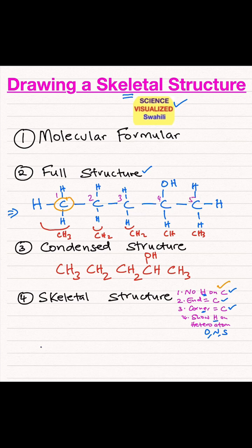So carbon number one is a corner, number two is another corner, number three is another corner, number four is another corner, number five is the last carbon.